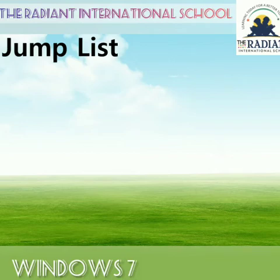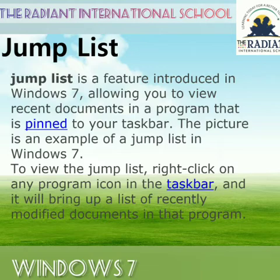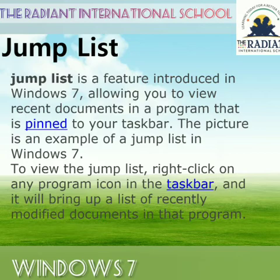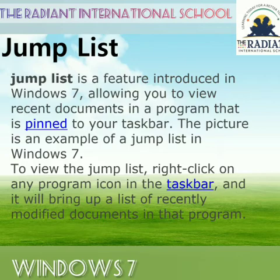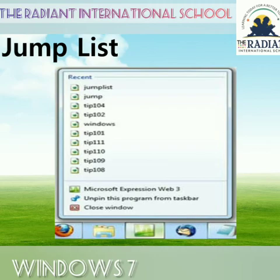Jump List is a feature introduced in Windows 7 that allows you to view recent documents in a program that is pinned to your taskbar. Whenever you point the cursor over a pinned program, a jump list will appear. To view the jump list, right-click on any program icon in the taskbar, and it will bring the list of recently modified documents in that program — that is called a jump list.